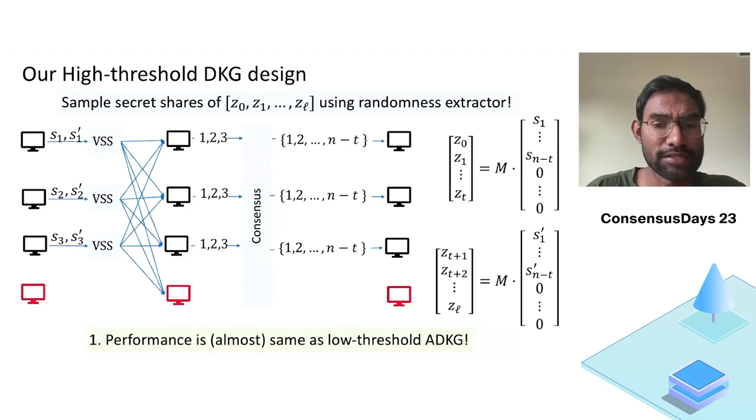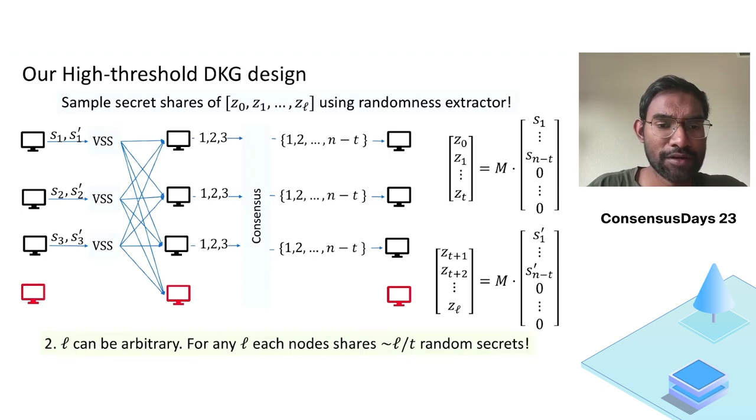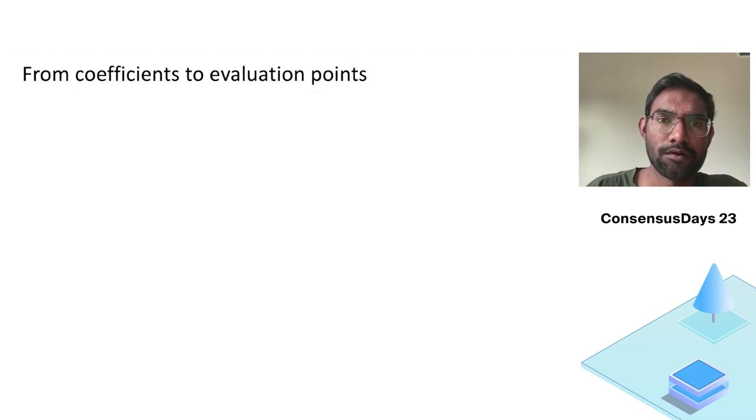There are two things to note: the performance is almost the same as low threshold DKG. And this l can be arbitrarily large. For any l, you just have to start with each party having to start with l over t random secrets.